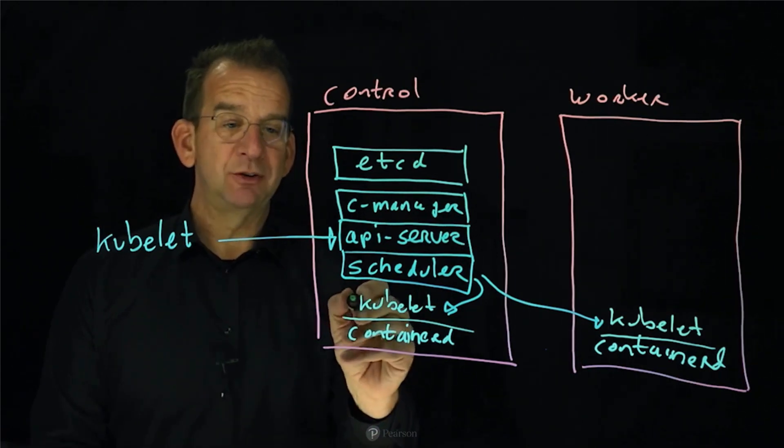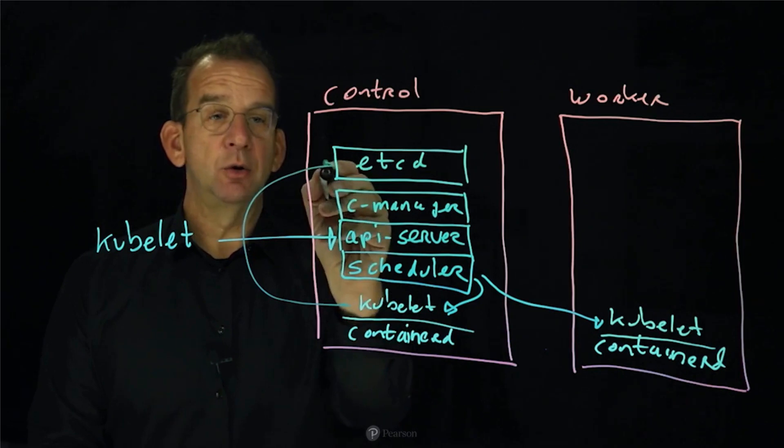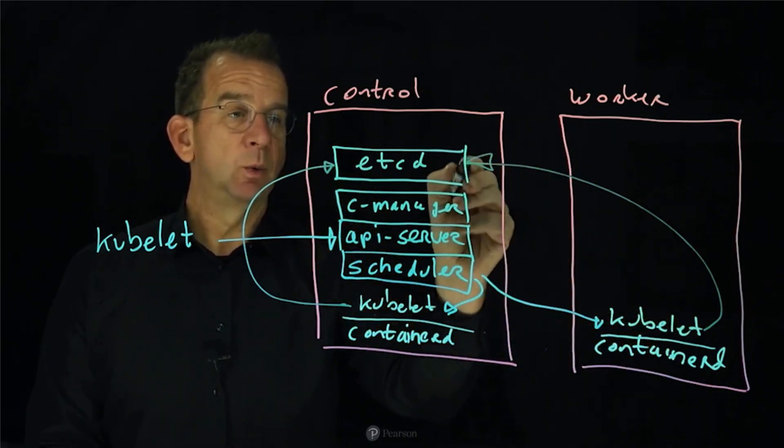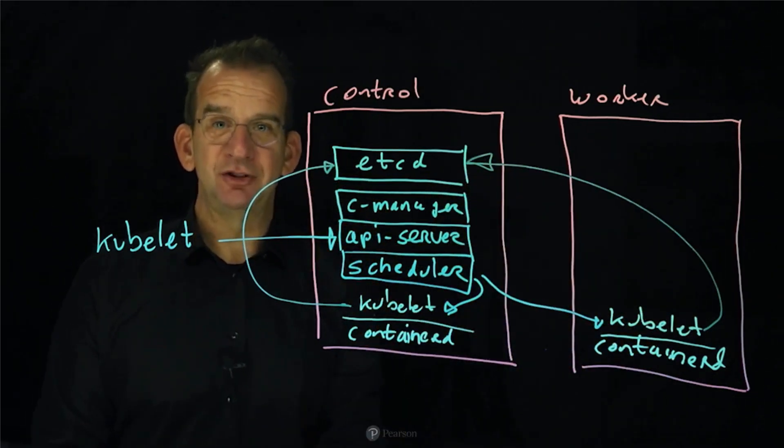So from the kubectl, you really get an arrow back to the etcd, updating whatever is happening in your Kubernetes environment.